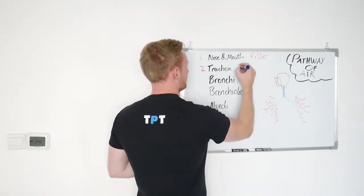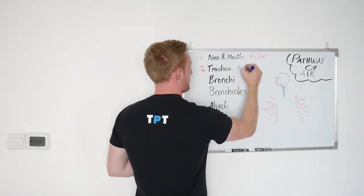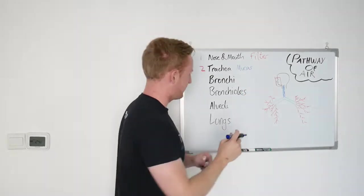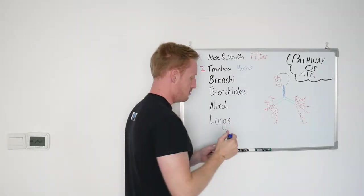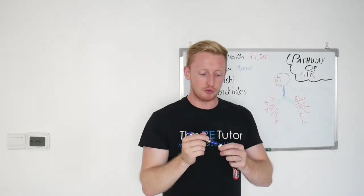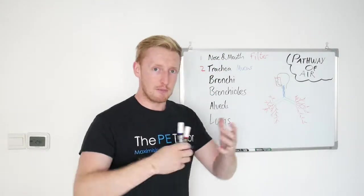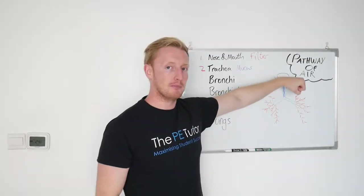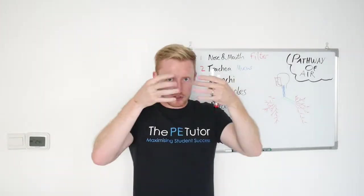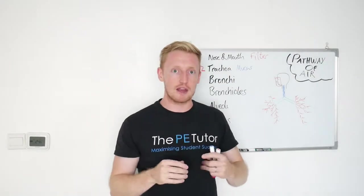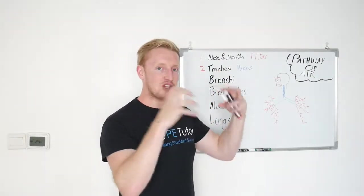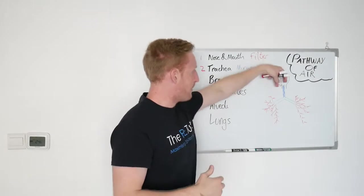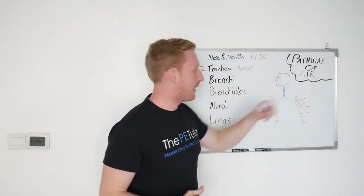On the inside of the trachea, there is a substance called mucus. Mucus serves the role of collecting debris and even finer particles that made it through the nose and mouth. It's quite sticky, and there are some microscopic hairs running down the inside of the trachea as well. It's there to catch any dust, any dirt, to prevent it from getting any further down that pathway.